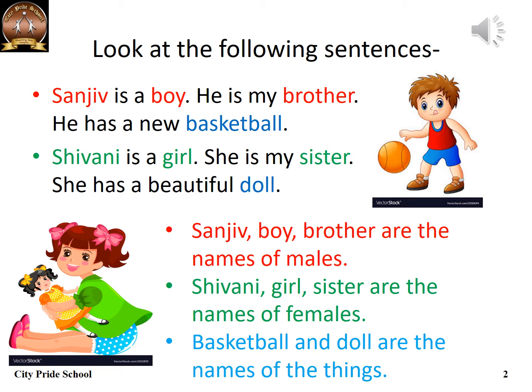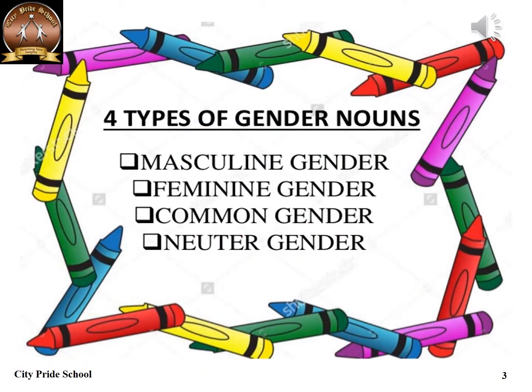So we will study nouns as genders. There are four types of genders: masculine gender, feminine gender, common gender, and neuter gender. Let's understand each of them one by one.